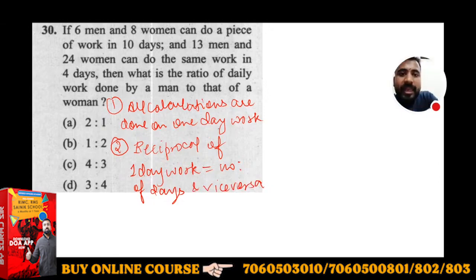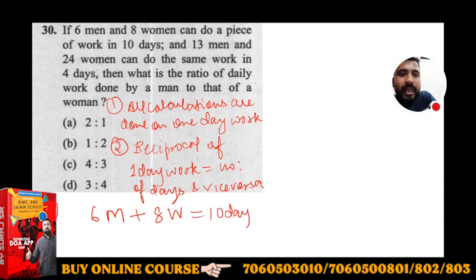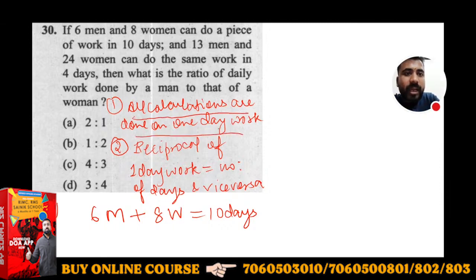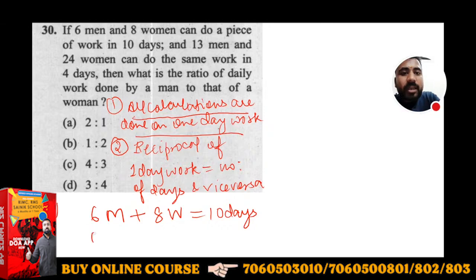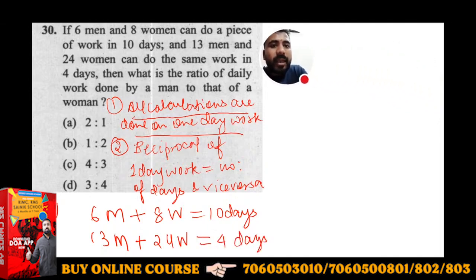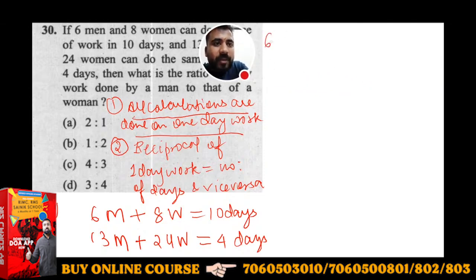Solution में: 6 men (M) + 8 women (W) मिलकर काम करेंगे तो 10 days में complete होगा। Total number of days के साथ calculation नहीं होगी, इसलिए इसे one day work में convert करते हैं। तो 6M + 8W का one day work = 1/10। इसी तरह 13M + 24W का one day work = 1/4।